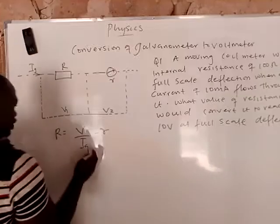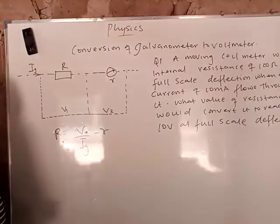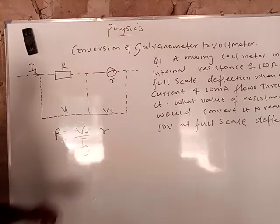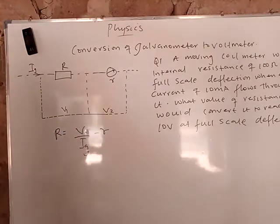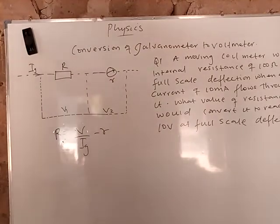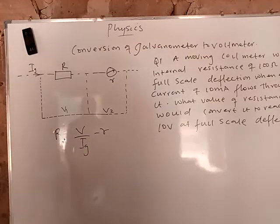Now this is a beautiful formula. The V there is the voltage, and you already know that Ig is the current of the galvanometer. The small letter r is the galvanometer resistance. That is a very powerful formula for you to use to calculate this thing.